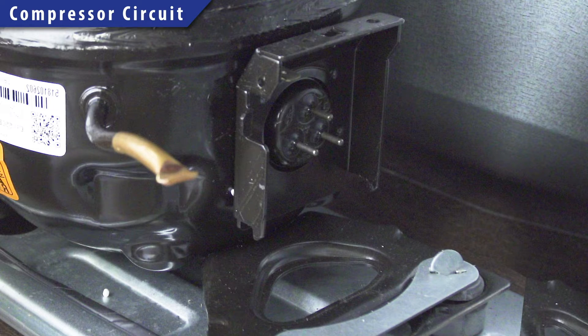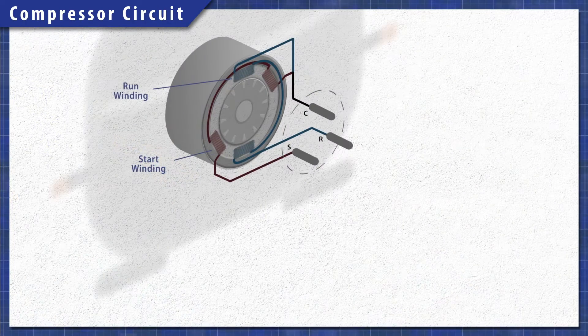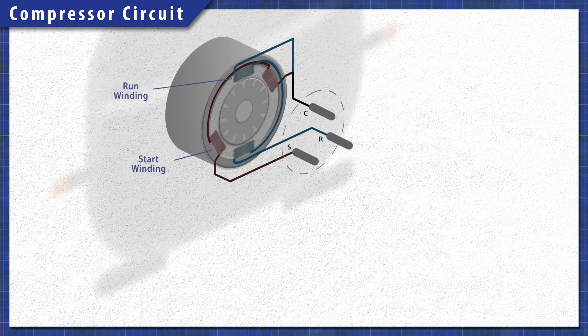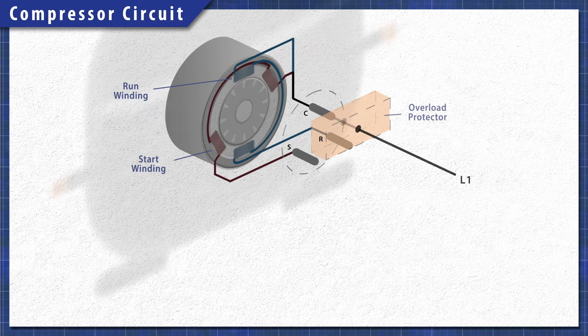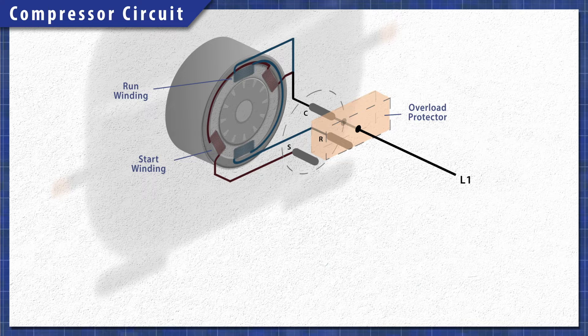The compressor uses a single phase motor. It has a start winding and a run winding which are both connected to a common terminal. Attached is an overload protector that disconnects power if the current or temperature gets too high.